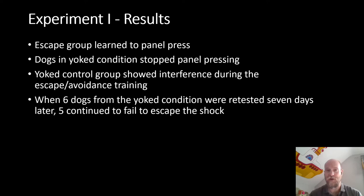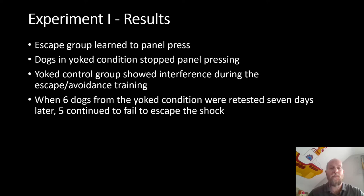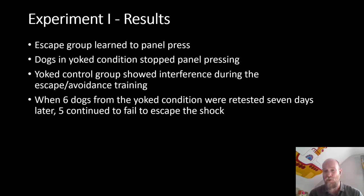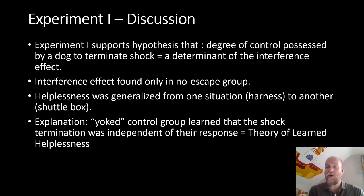The mean number of failures to escape for the escape and normal control groups were 2.63 and 2.25 respectively, whereas the yoked control was 7.25 — a pretty significant finding. As a manipulation check, the escape group did learn to press the panel, confirming the independent variable was effective. The dogs in the yoked condition actually stopped panel pressing during the initial phase and then displayed interference during subsequent shuttle box escape-avoidance training. Six dogs from the yoked condition were retested seven days later, and five of the six continued to fail to escape the shock.